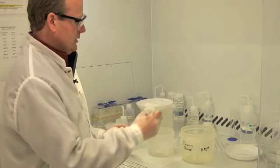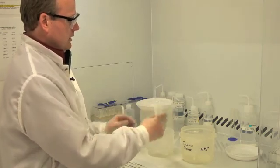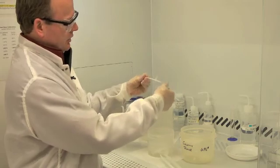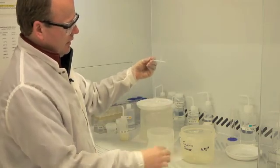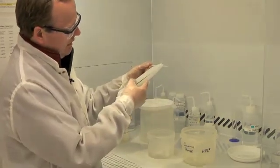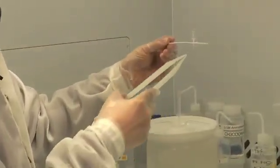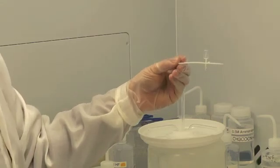That separation takes place in what we call a column. This is an example of an ion exchange column. It's a miniaturized version which has a thin, narrow column, a reservoir at the top, and at the bottom is a porous plastic frit.